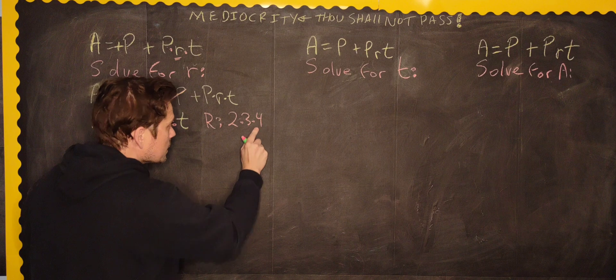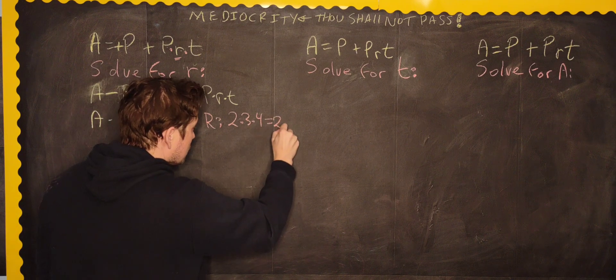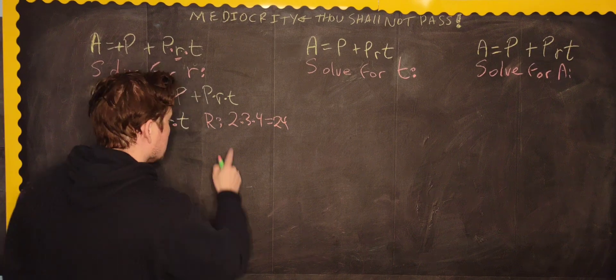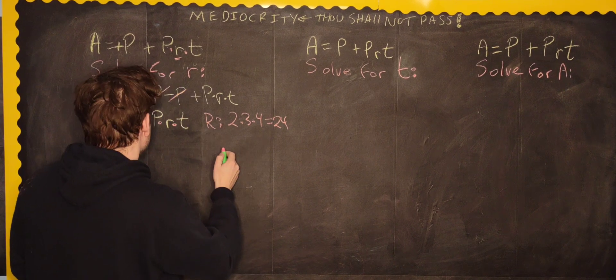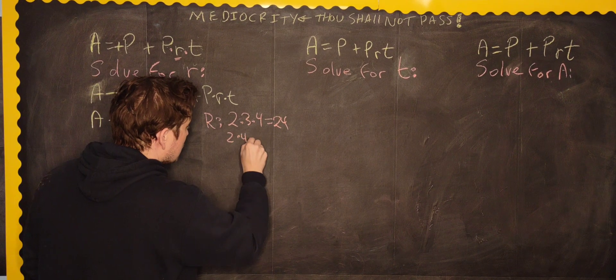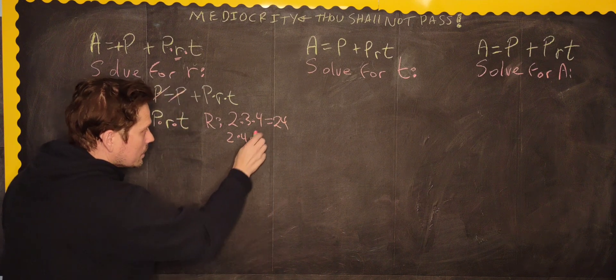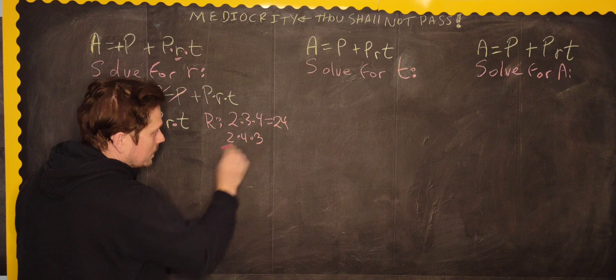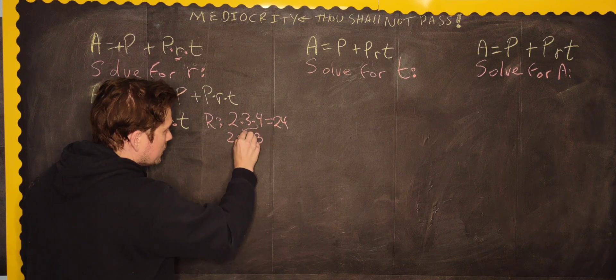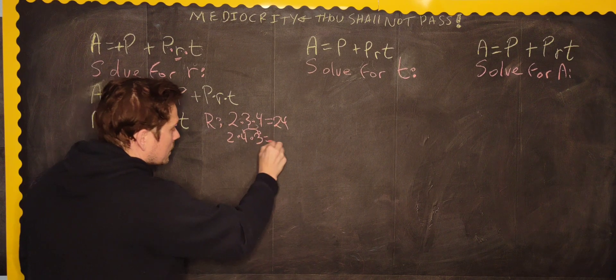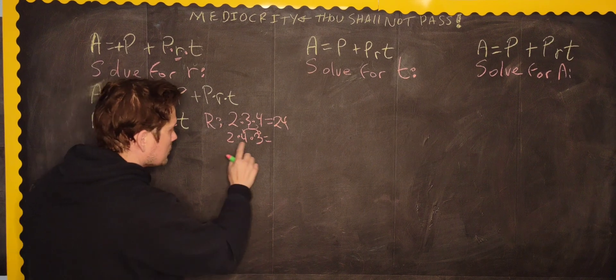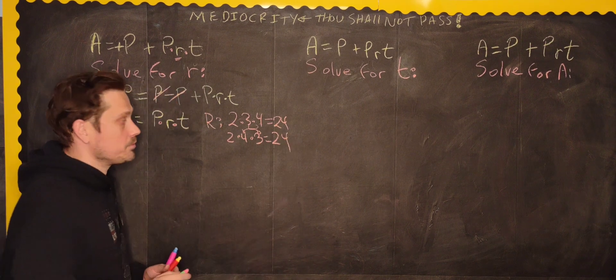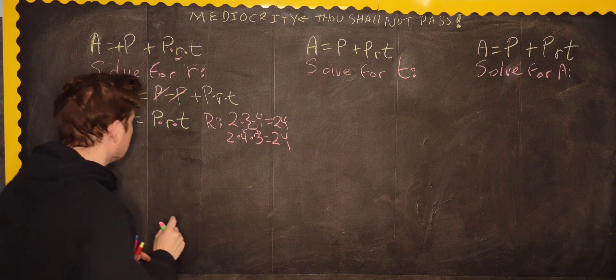What if you group it this way as an example? What if you do here 2 times 4 times 3? So, I have just taken the 4 and I'm placing it next to the 2. And the 3 comes to the end now. That doesn't change anything because now you have 2 times 4, which is 8. 8 times 3 is 24 still, right? That's simple multiplication.